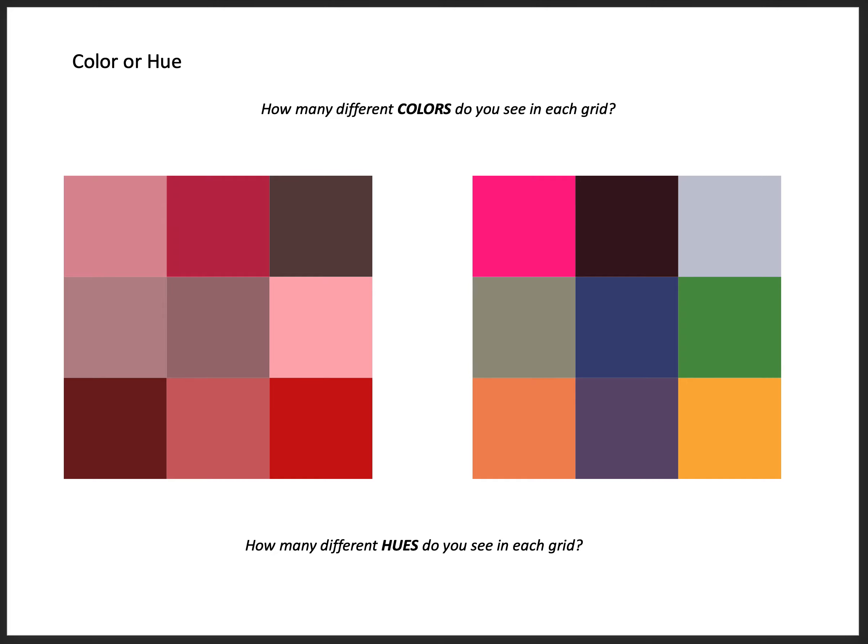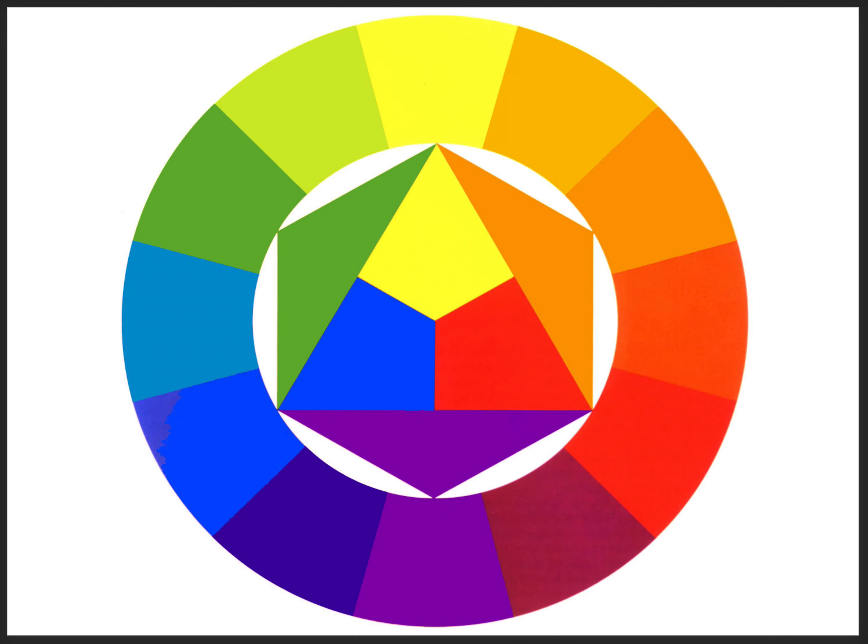What we see here is that color describes a very specific color — hue, value, saturation, and temperature. And hue describes a very common or general way of thinking about a color. There are very few hues, where there are literally millions of colors.